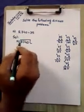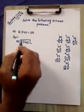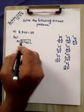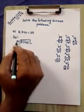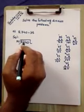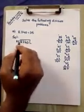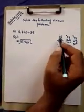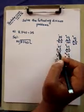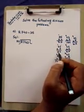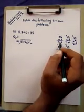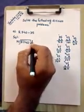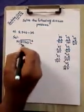Now here, we will put the table of 35 on 8. But 8 is smaller than 35, so we can't place it. We combine 8 and 7 to get 87. We need to find the closest table of 35 on 87. One time is 35, two times is 70 — we need 70, which is two times. Write 2 here and write 70 below 87.